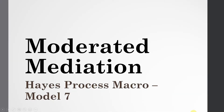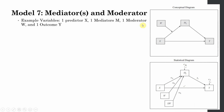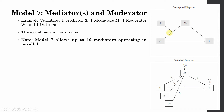In this session we are going to test moderated mediation using Hayes Process Macro Model 7. Model 7 includes mediators and a moderator. In this example we have one predictor, one mediator, one outcome variable, and one moderator. All variables are continuous, and it is important to note that Model 7 can allow up to 10 mediators operating in parallel.